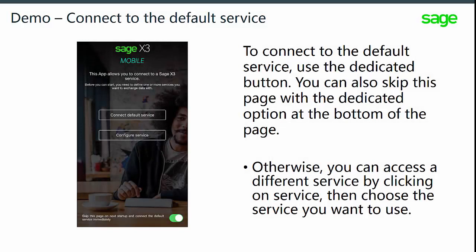To connect to the default service, use the dedicated button. You can also skip this page with an option at the bottom of the page. Otherwise, you can access a different service by clicking on Service, then choose the service you want to use.